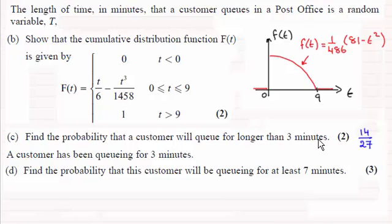So let's put down what we're being asked. This is to work out the probability that a customer queues for at least seven minutes. That's T greater than seven, but we're given that the customer's been queuing for three minutes. So this is given that T is certainly greater than three.